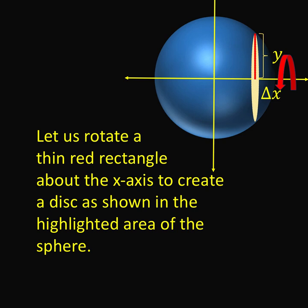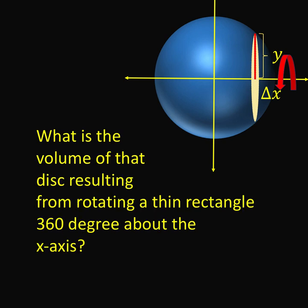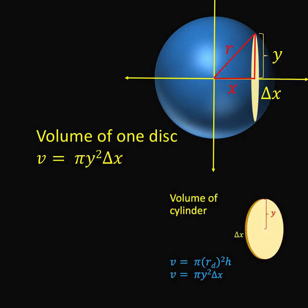Now let's go back to our sphere that we sliced at the beginning. Let's begin with this red rectangle that is perpendicular to the x axis. And then, let's rotate this rectangle 360 degrees around the x axis in order to form this disk. What is the volume of the disk resulting from this rotation? A while ago, we already said that the volume of this disk is v equals pi y squared delta x.